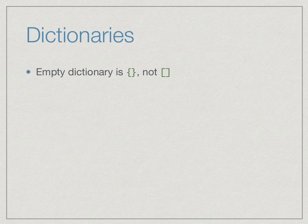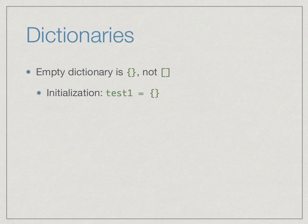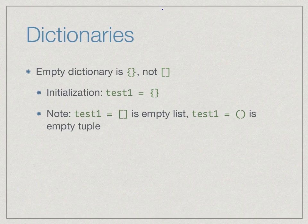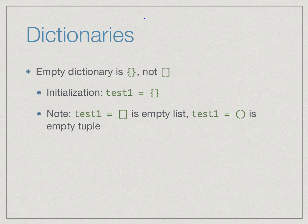We need to tell Python that a name is a dictionary and not a list. We signify an empty dictionary by curly braces — recall that square brackets are used for lists. To initialize the dictionary we saw earlier, we first say test_one equals the empty dictionary using curly braces, then start assigning values for each player. Notice: strings use quotes, lists use square brackets, tuples use round brackets, and dictionaries use curly braces — each collection type has an unambiguous syntax.